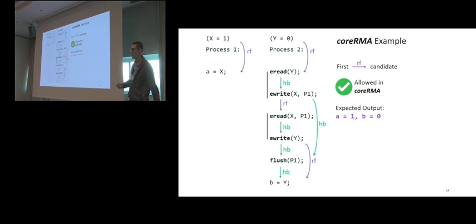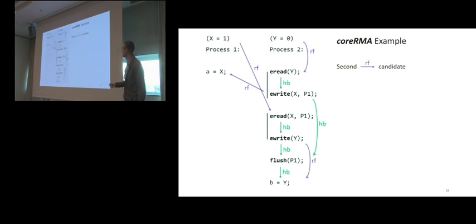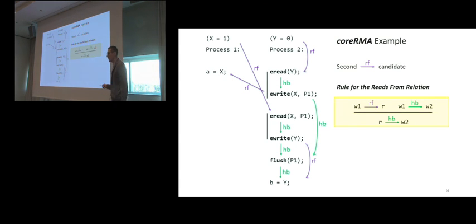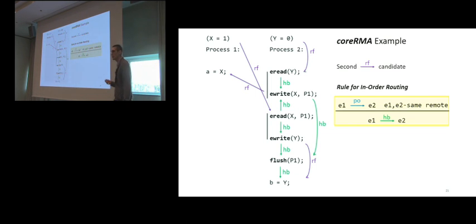Let's now illustrate our coreRMA rules for a second possible read from relation. I will just keep the happens before relations since they were independent of the read from. For this case, one rule that we have in our model that refers to two write operations and the read operation says that if R reads from W1 and W1 happens before W2, then the read happens before W2. We instantiate this rule for the initial value of x is 1 here for the eWrite, and the read will be this eRead relation. Applying it will result in this happens before, so the read happens before the write.